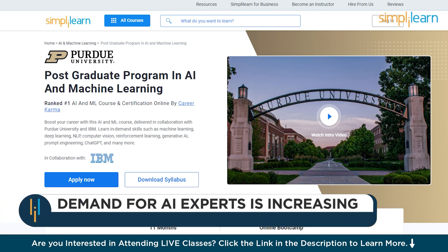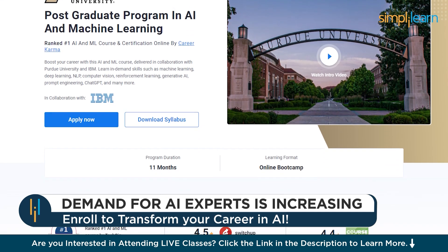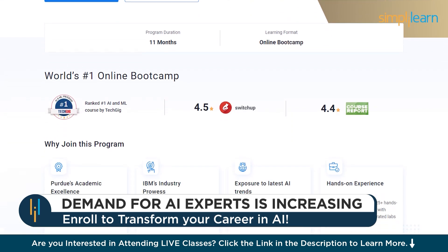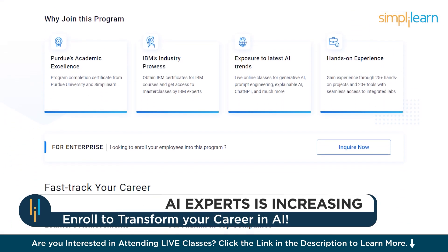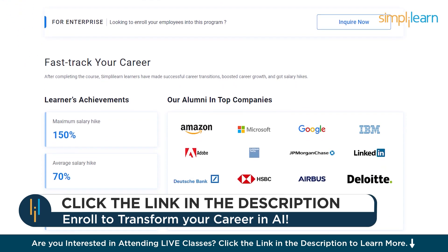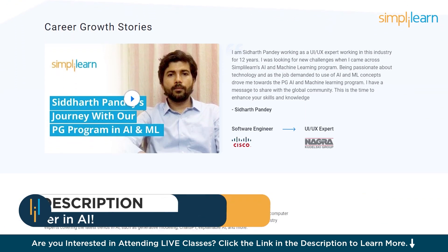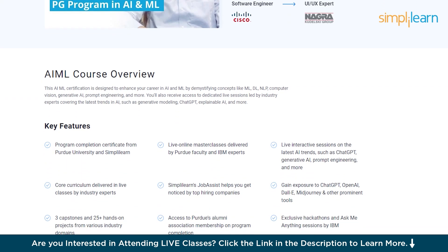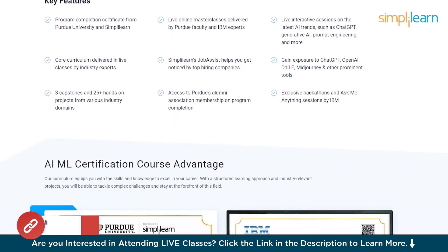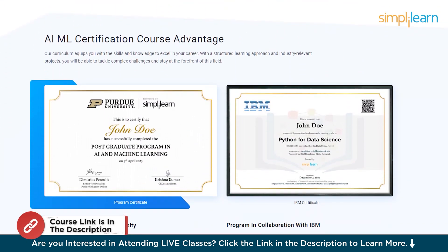You can boost your career with this AI and ML postgraduate program in collaboration with Purdue University and IBM. You are going to learn in-demand skills such as machine learning, deep learning, NLP, computer vision, reinforcement learning, generative AI, and many more. So hurry up now and join the course. The course link is mentioned in the description box.